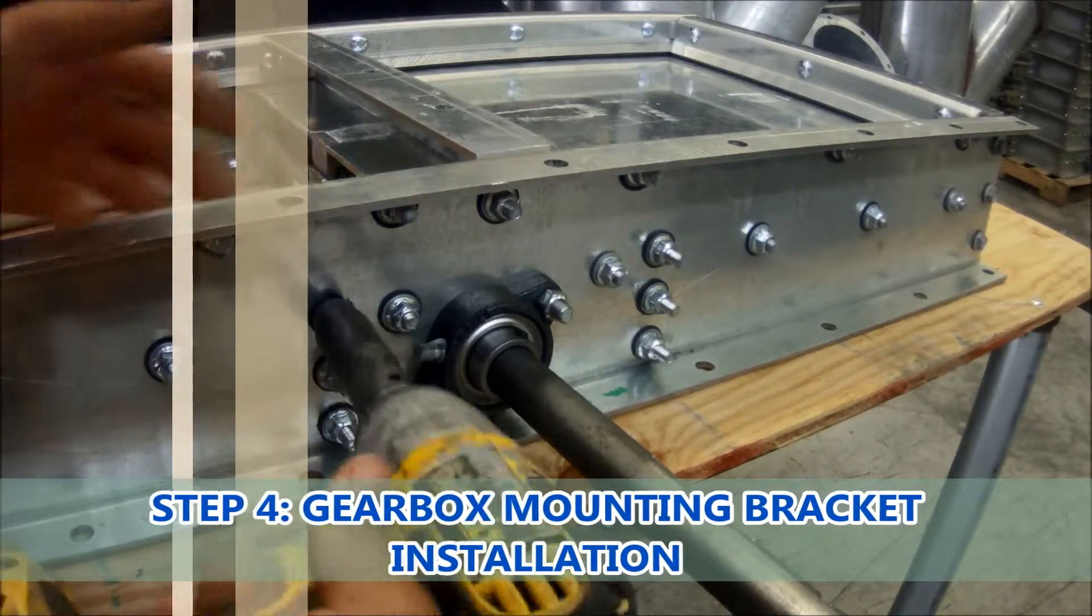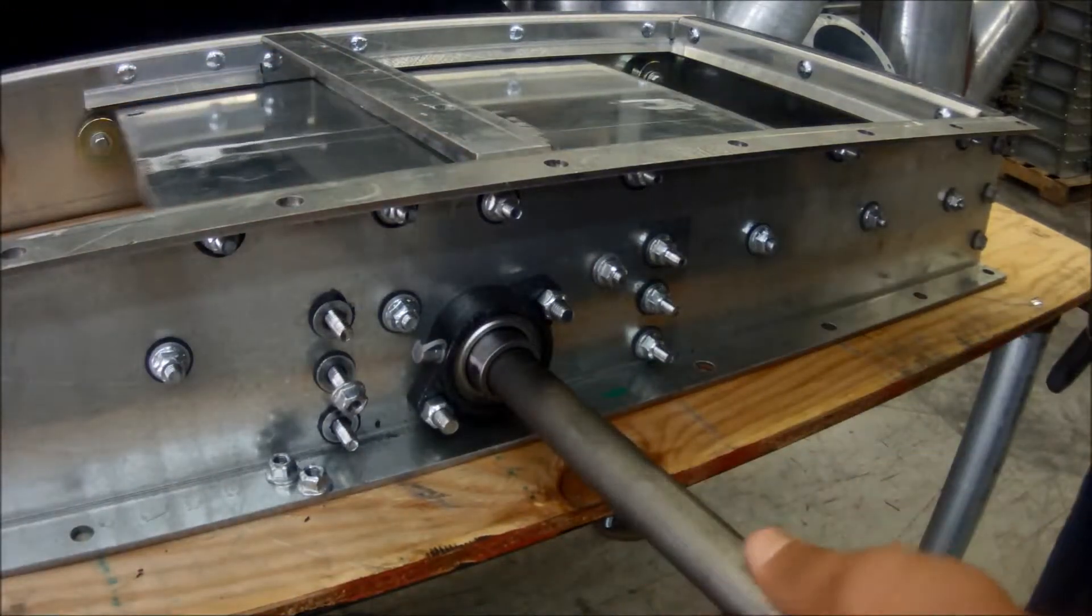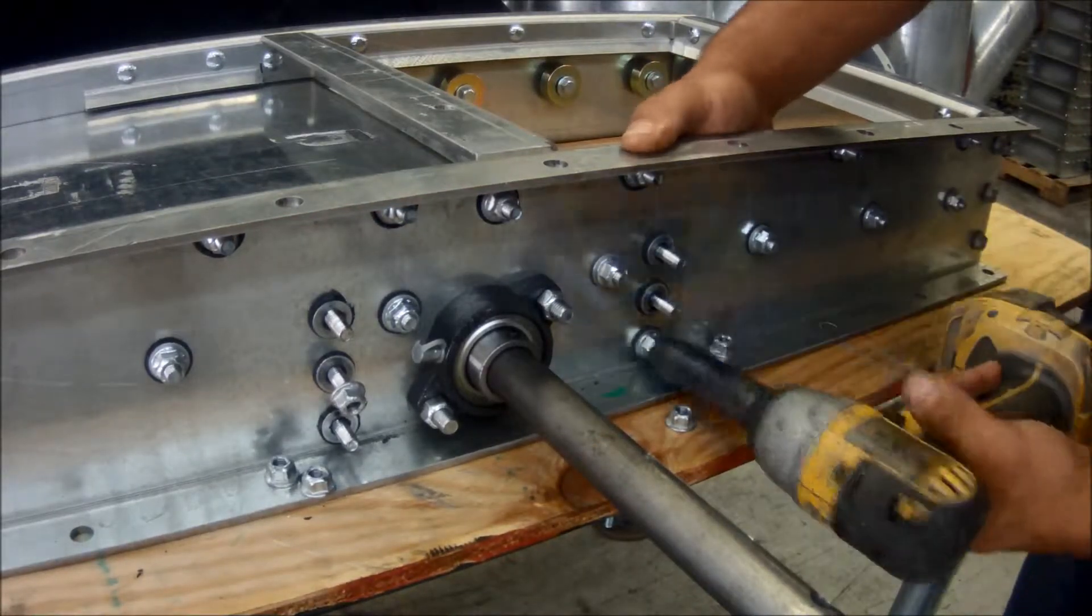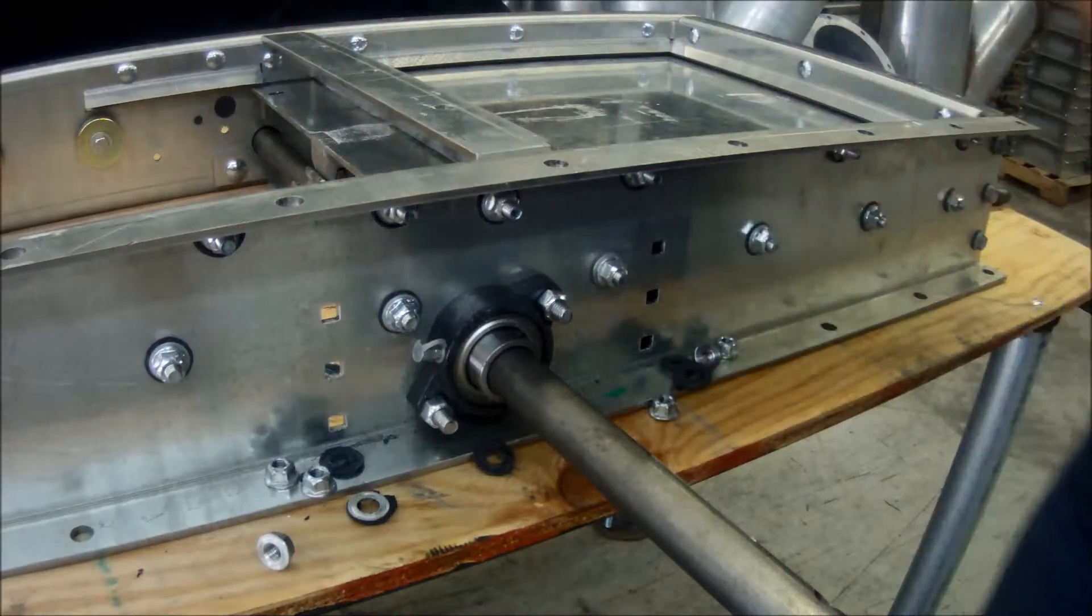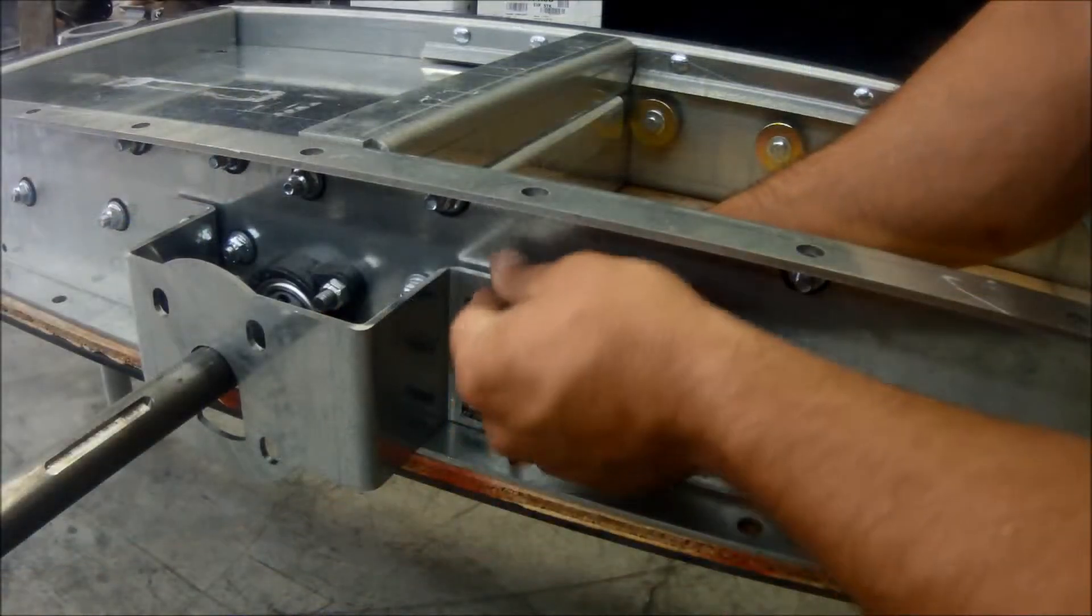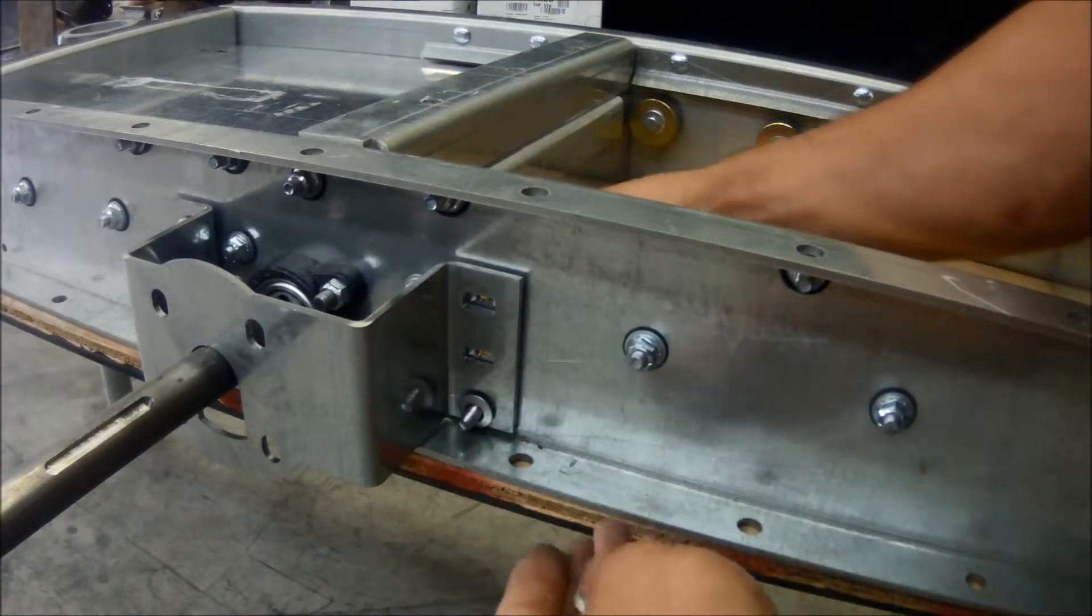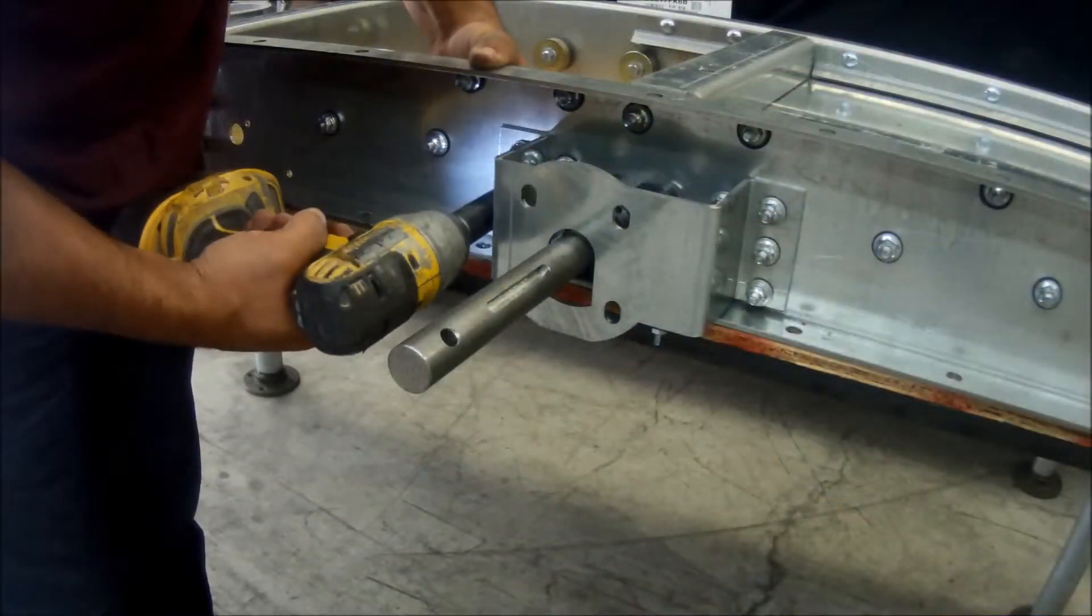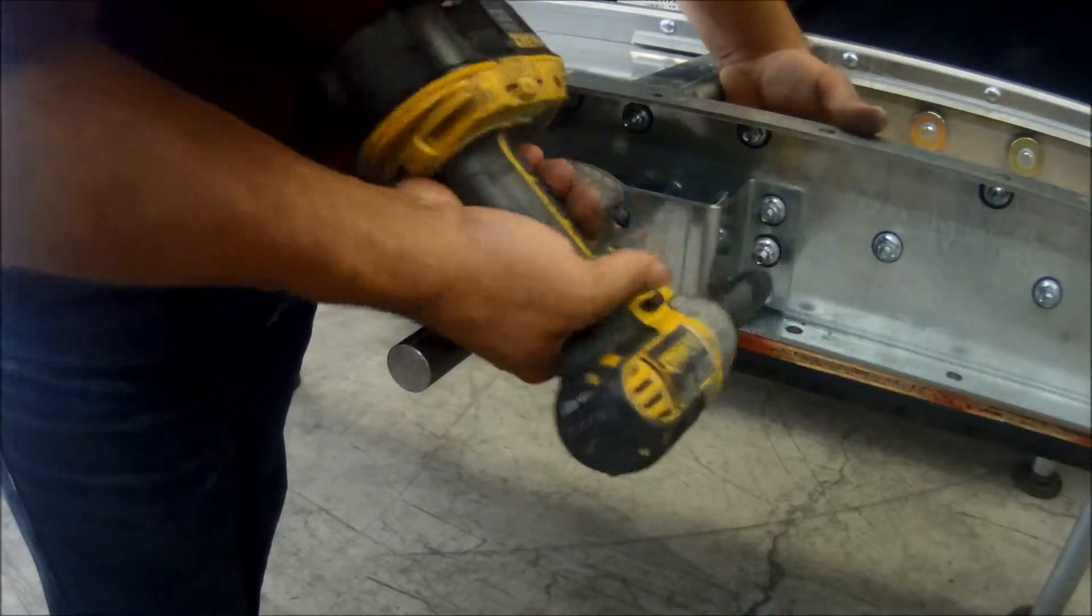Next we will mount the gearbox bracket. To start this, remove the hardware that was included in your manual original gate. You will not need the seal washers anymore so they can be discarded. Once all the carriage bolts are removed from these locations, you may then install the bracket. Be sure that you install the bracket with the flat edge down. Reuse the original carriage bolts with the new seal washers provided in the kit and tighten down the bracket.